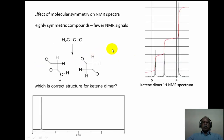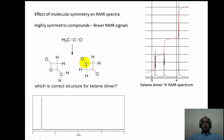Let us look at a very simple example of ketene dimerization, which illustrates how complex an NMR spectrum becomes when the molecule is unsymmetrical, and how fewer lines are seen when the molecule is highly symmetrical. Ketene can undergo dimerization in two different ways. In one case, two molecules undergo dimerization at the carbon-carbon double bond in a head-to-tail fashion to give a diketone product. In another way, a C=O and a C=C undergo 2+2 cycloaddition to give a beta-lactone structure.